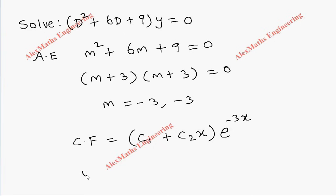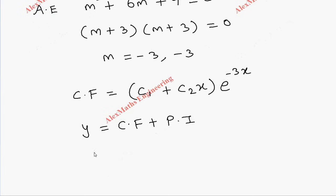Therefore, the solution y = CF + PI, and there is no PI, so our final answer is y = (c1 + c2x)e^(-3x).